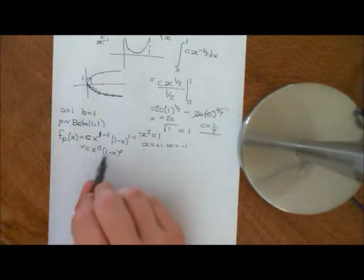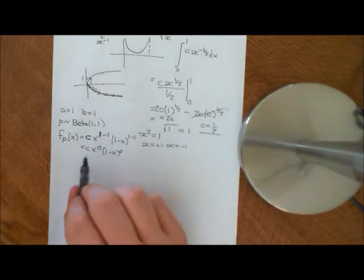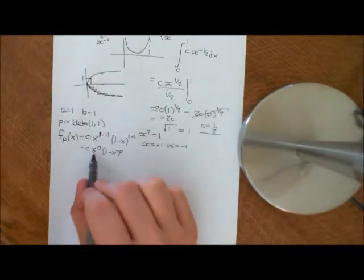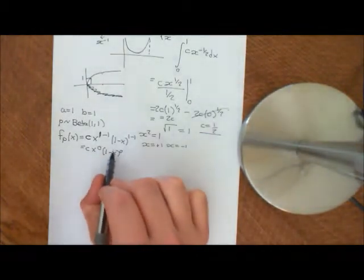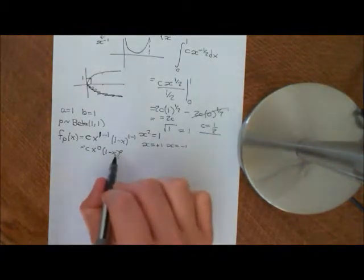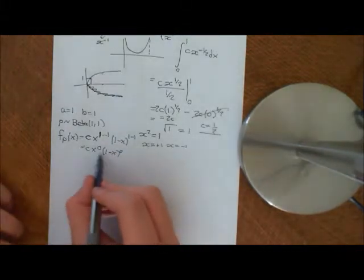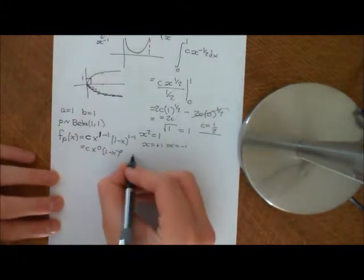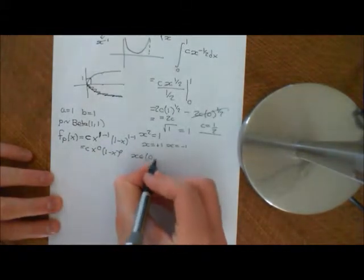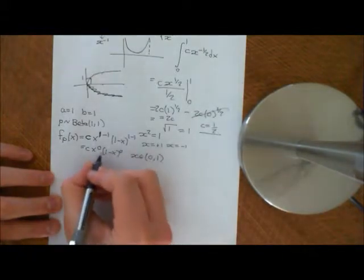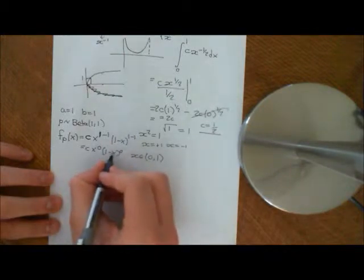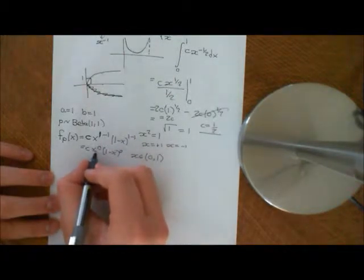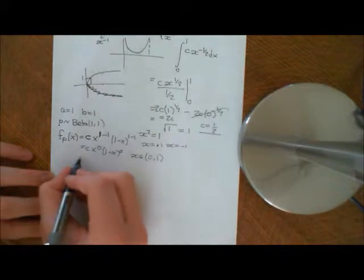We're only talking about the open interval 0 to 1, so we don't need to worry about getting 0 to the power of 0 here, or 1 minus 1 to the power of 0. So basically, whatever number x you put in there, which is an element of the open interval 0 to 1, when you take any number in that interval and plug it in, you get some non-zero number to the power of 0, which is just 1. So this comes out to be a constant.